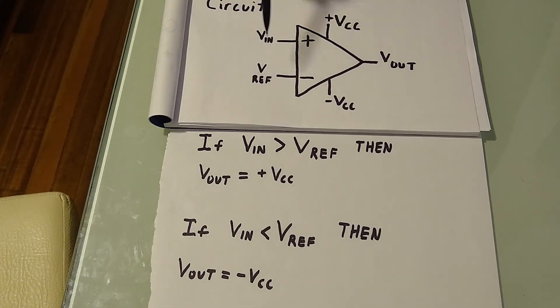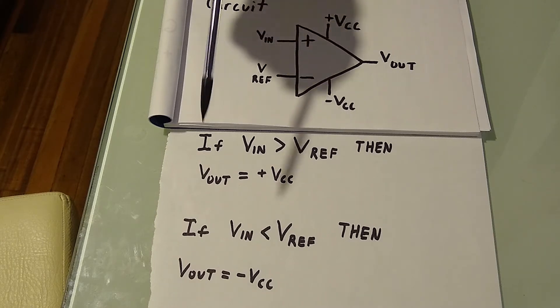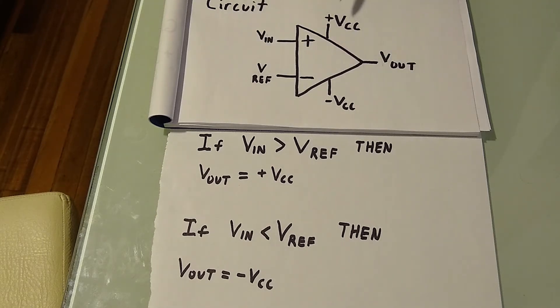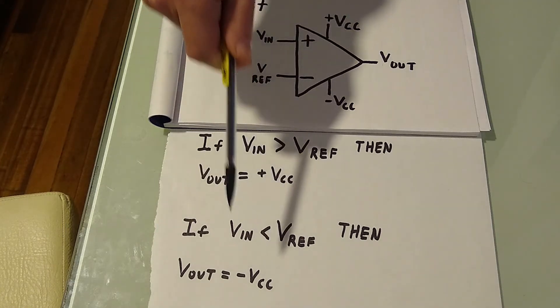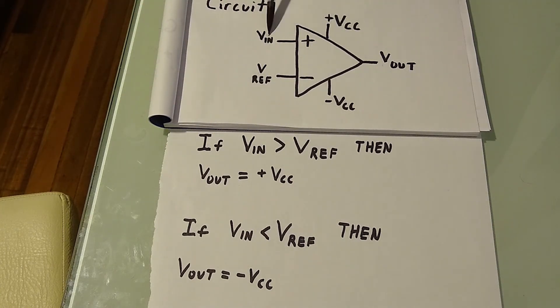Okay, to review: If your voltage in is greater than your voltage reference, then your V out is going to be your positive VCC. If your voltage in is less than your voltage reference, then your V out is going to be your negative VCC.